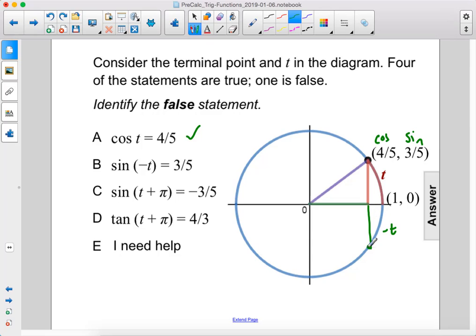And the sine value for negative t is going to be the same absolute value, so it's gonna be negative three over five instead of positive three over five. So here you see that it says positive three over five, but it should be negative. The answer to this problem is b.